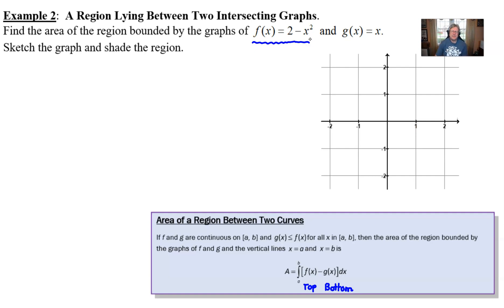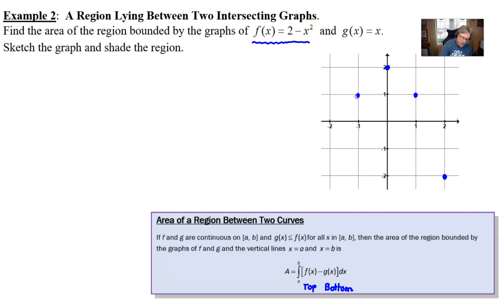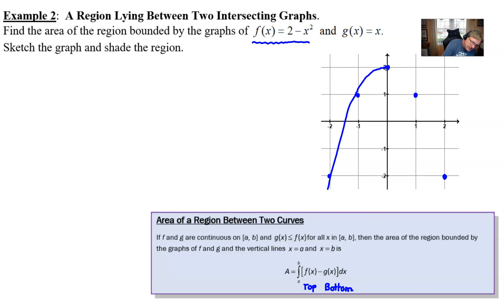If graphing is a little complicated, you can run some values through x. Let x be 0, y is 2. If x is 1, 2 minus 1 squared is 1. If x is 2, 2 minus 4 is negative 2. By virtue of that square, negative x values give the same outputs as positive ones. Connecting the dots, we have an upside-down parabola, as indicated by the minus in front of x squared.